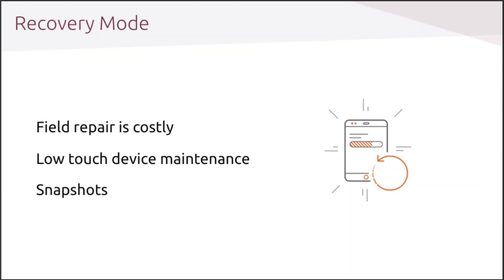Ubuntu Core offers a recovery mode that can be activated manually when booting or remotely via a command line or an API call. In that recovery mode, maintenance operations can be done. Snapshots is another key feature of Ubuntu Core related to maintenance, allowing to backup all the data of the applications so that it can be restored in case of corruption or malfunction.